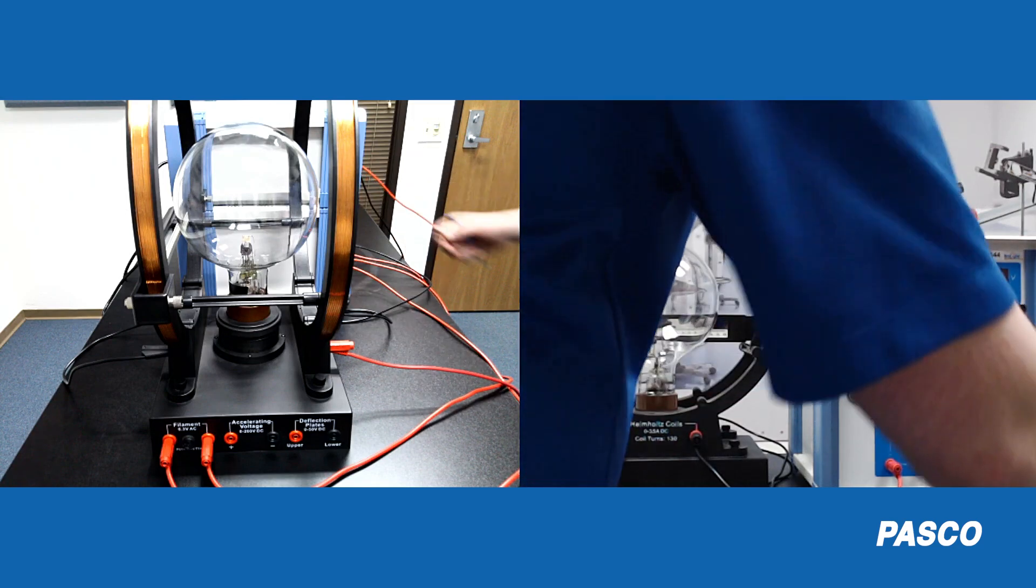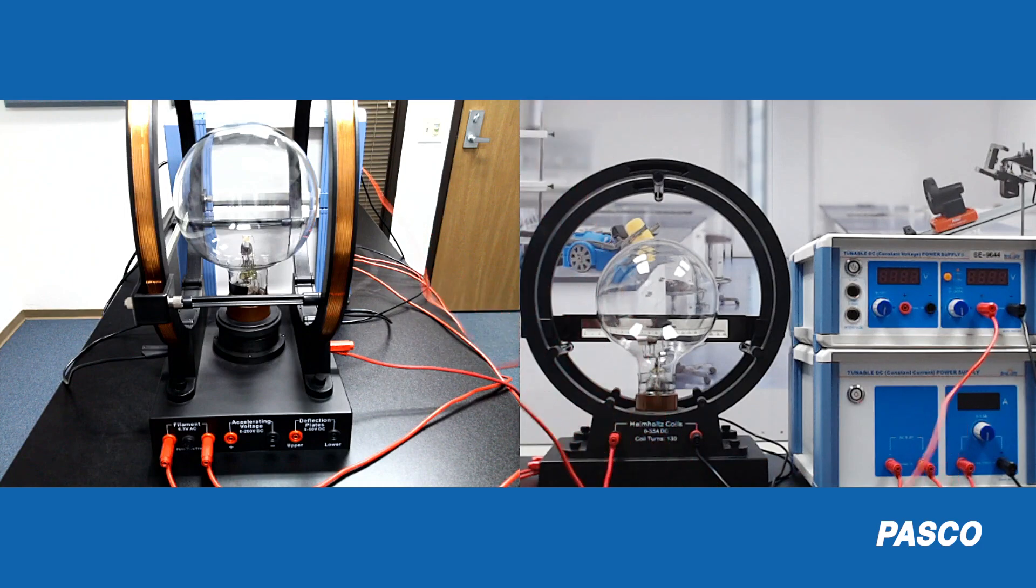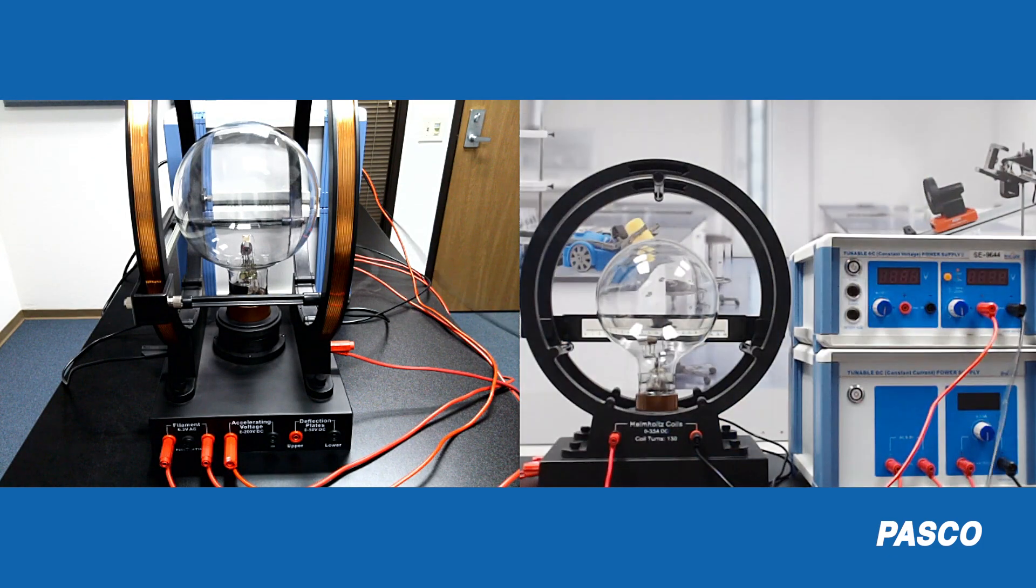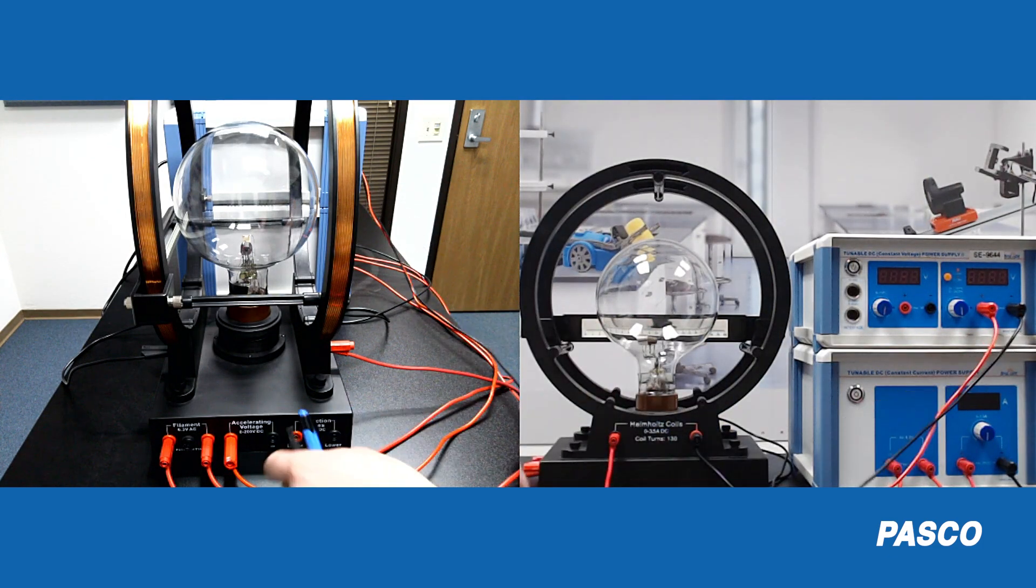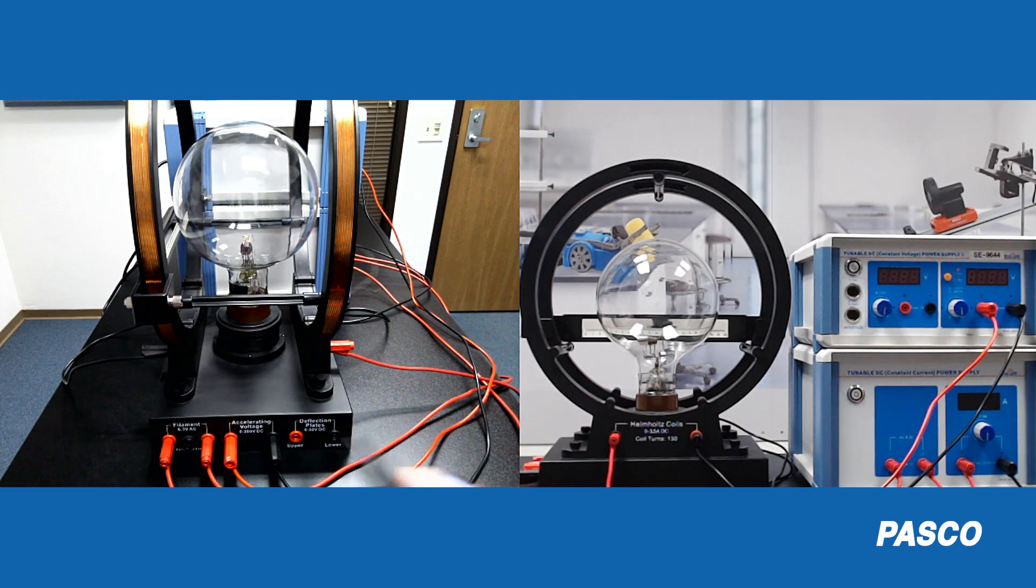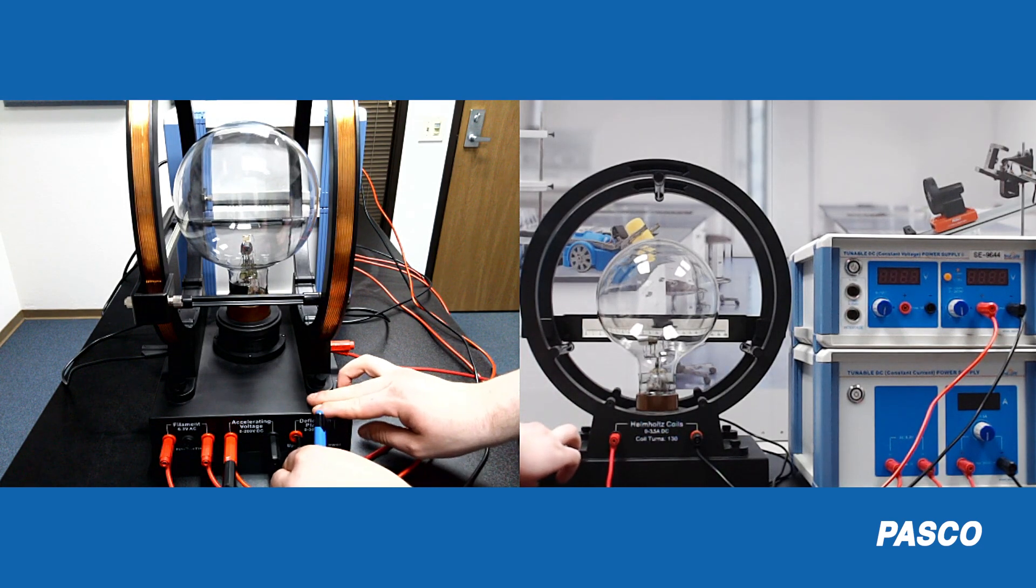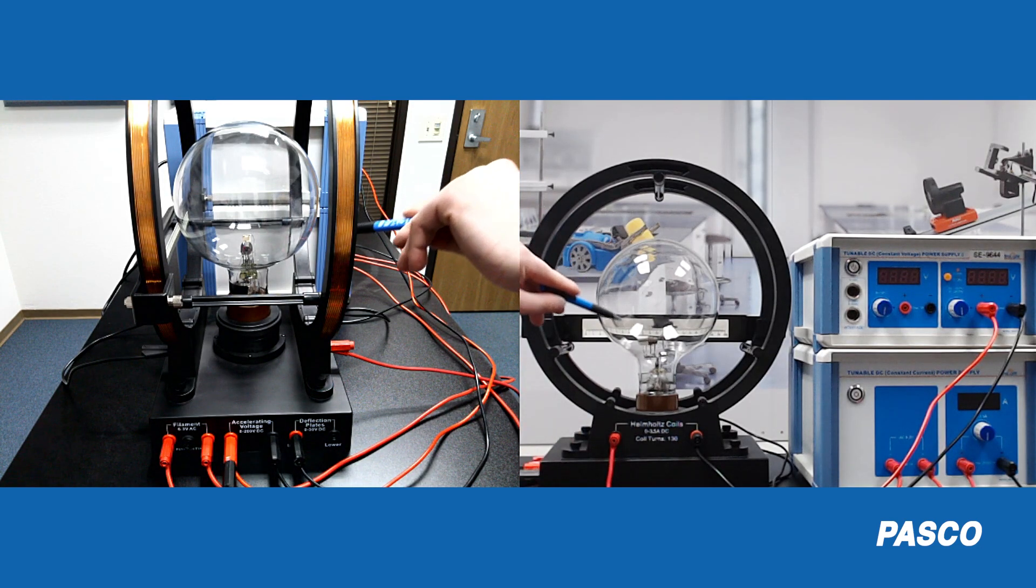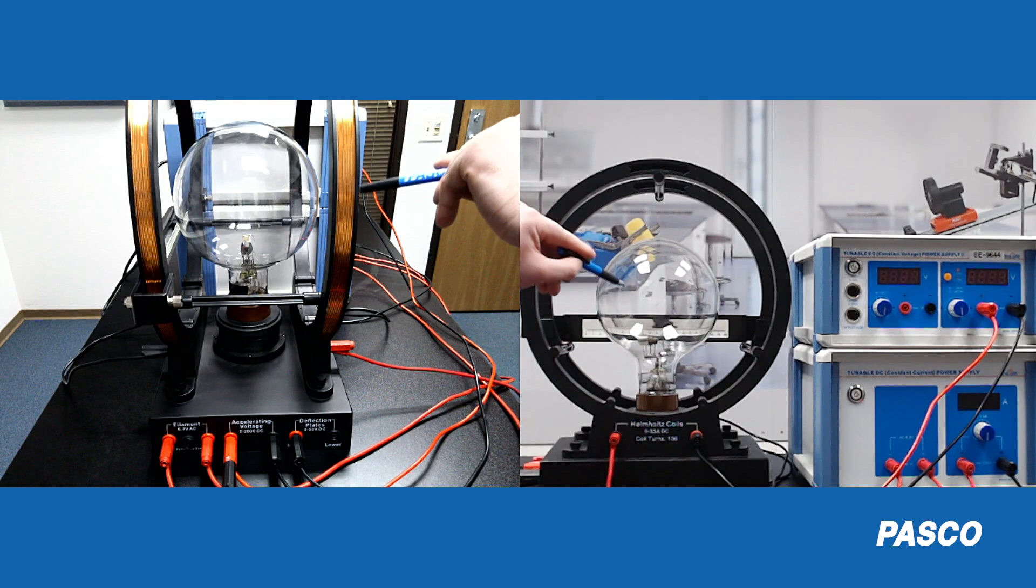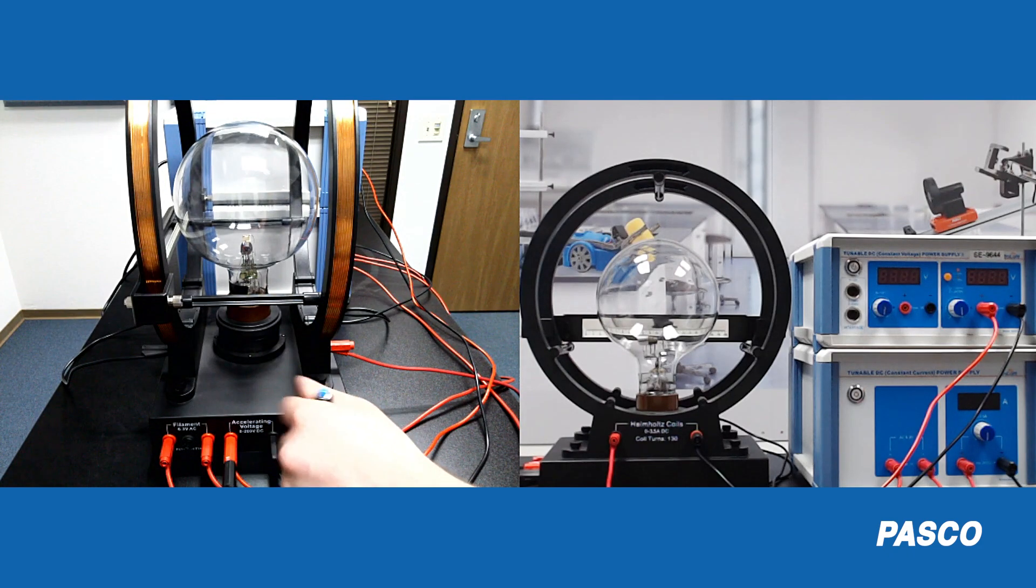After that we will then connect the accelerating voltage positive output into the accelerating voltage input here on the base. And then same thing with the black. Connect to the low potential. And then we need to add a jumper wire from the positive accelerating voltage to the upper deflector. And you'll notice here on our electron gun there are two deflector plates, one on top, one on bottom. Connecting a positive voltage will pull electrons up. And we'll get to removing this here at the end.